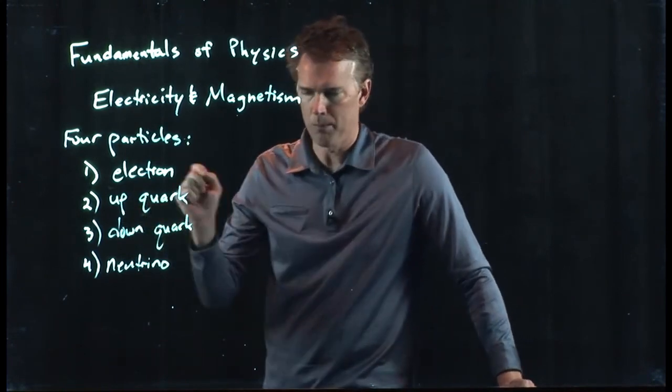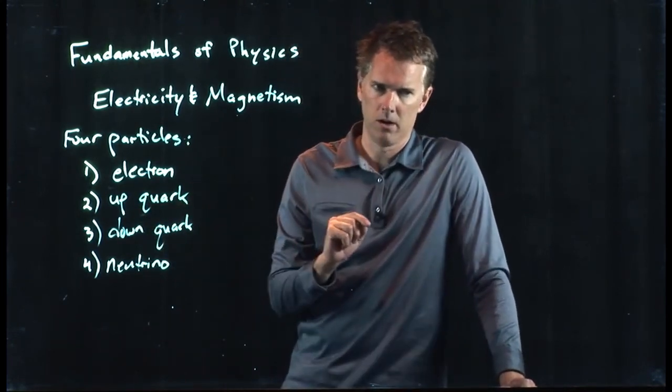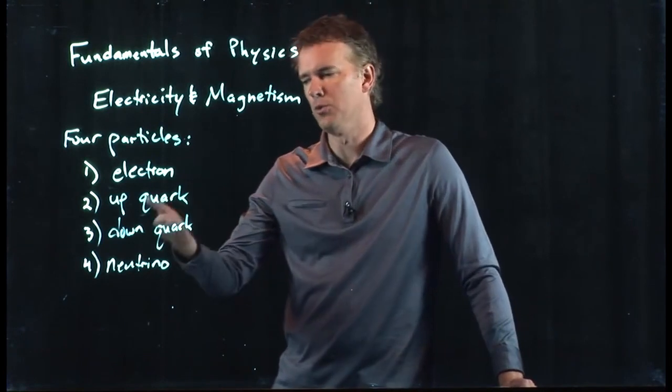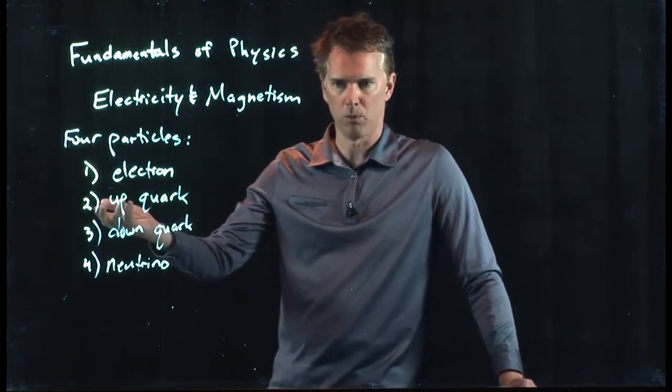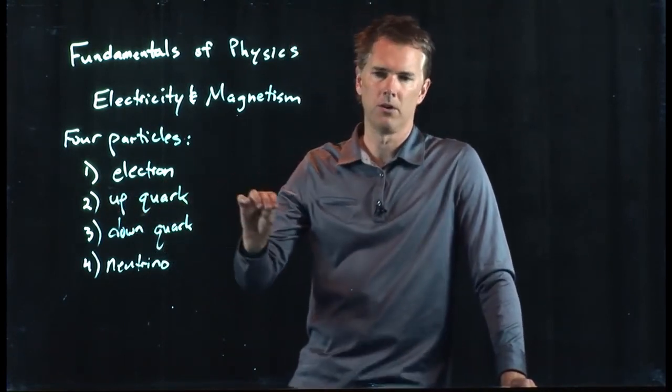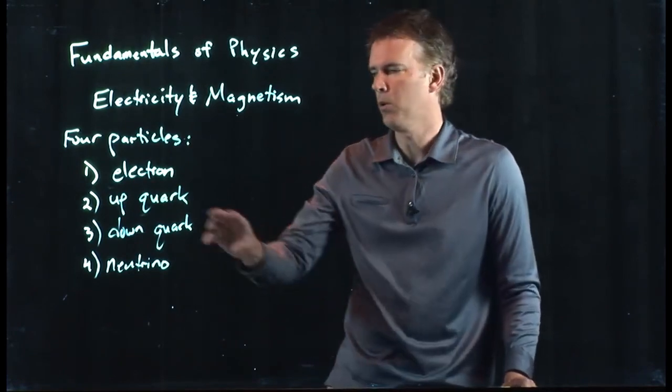A proton is two up quarks and one down quark. A neutron is two down quarks and one up quark. So protons and neutrons are, in fact, made up of quarks.